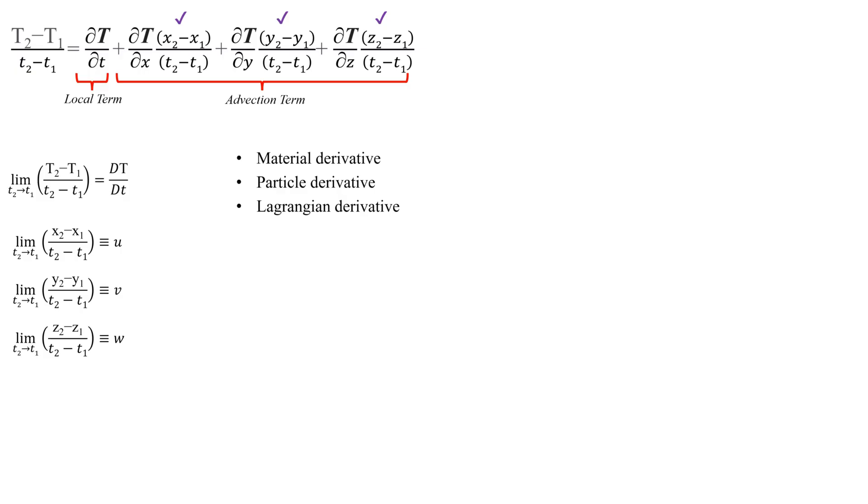In our scenario, the substantial derivative accounts for both factors affecting the temperature change. It captures, firstly, the cooling effect from entering the air-conditioned room, which is related to the parcel's movement through space, known as the advection term.